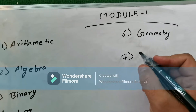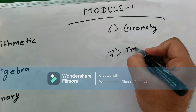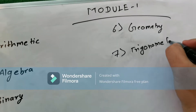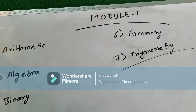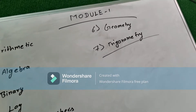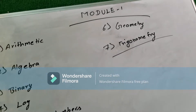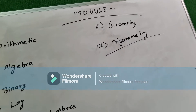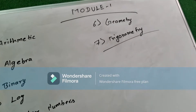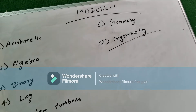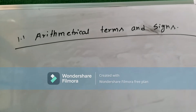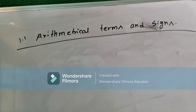We will also talk about trigonometry. You know sin theta, cos theta, and identities like sin²θ + cos²θ = 1. We will study values like sin 30° = 1/2, cos 30° = √3/2, tan 30°, and tan 45°. That's all for today.